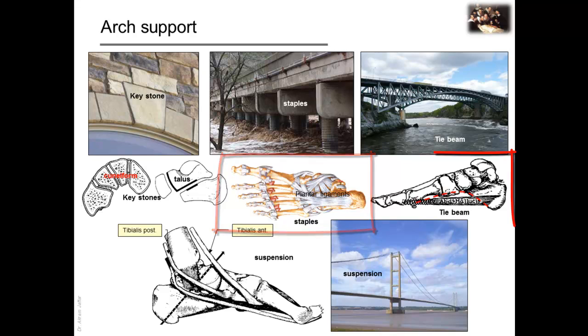Tie beams can also be used to connect pillars of an arch or a bridge and prevent their separation. In this respect, the abductor hallucis and the abductor digiti minimi act like tie beams for the medial and lateral longitudinal arches.